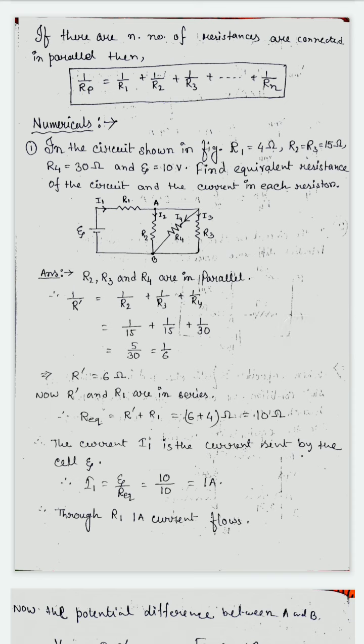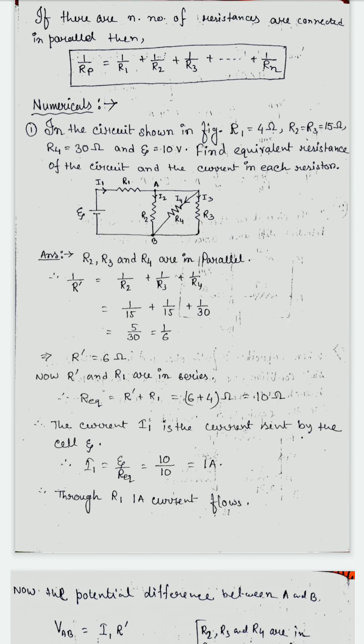See this diagram. Here R1, R2, R3, R4 resistors are there. The potential is denoted by E, that is 10 volts. We find out the equivalent resistance of the circuit and the current in each resistor. From this figure you see that R2, R3, and R4 — these three are connected in parallel. One end of each of R2, R4, and R3 are connected together at point B, and the other side is connected to point A. So when they share the same common points, that is a parallel combination.